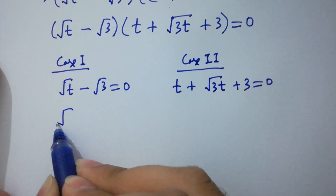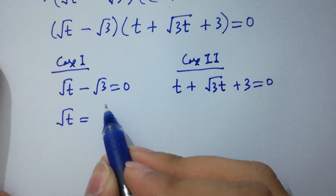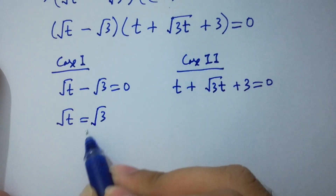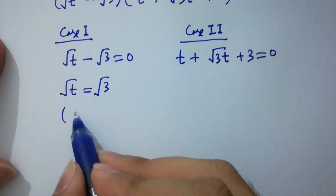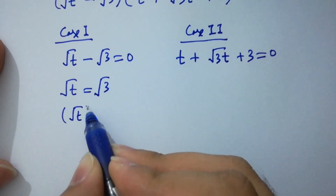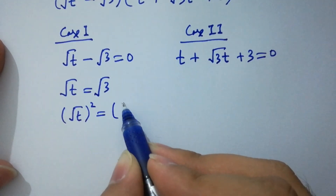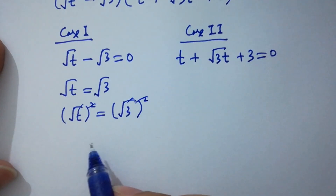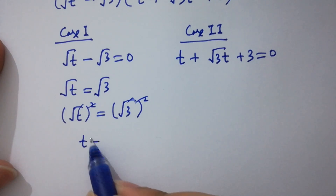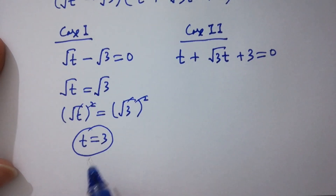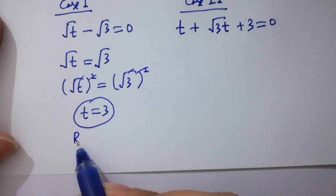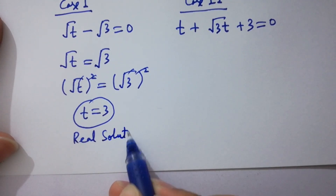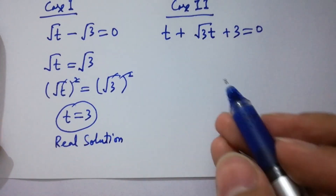From Case 1, we have square root of t equals square root of 3. Taking the square on both sides, the square root cancels and we get t equals 3. This is our real solution.